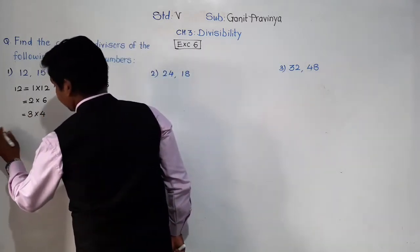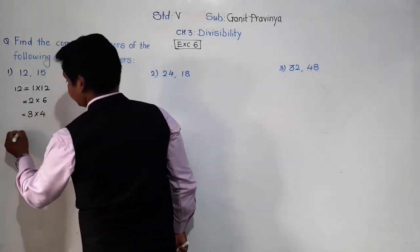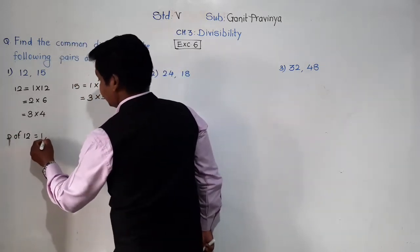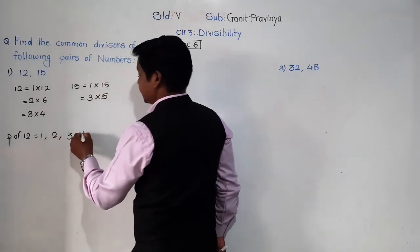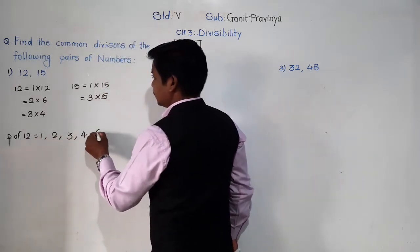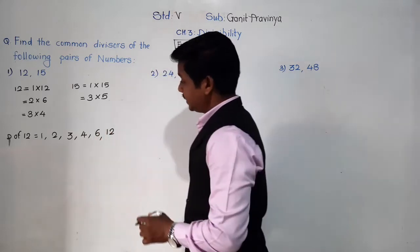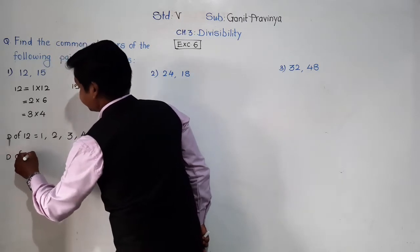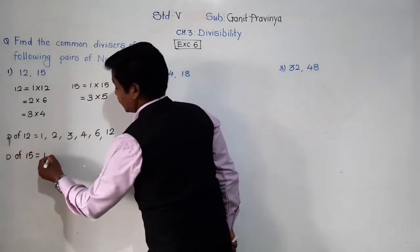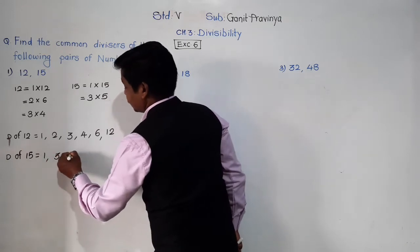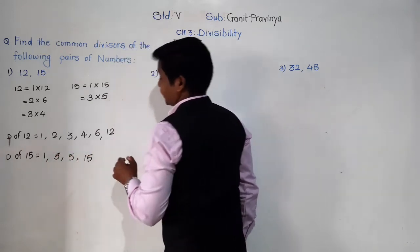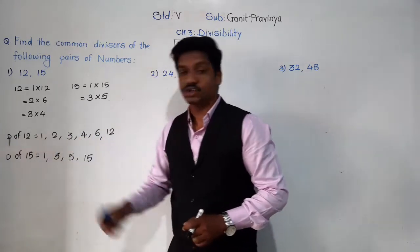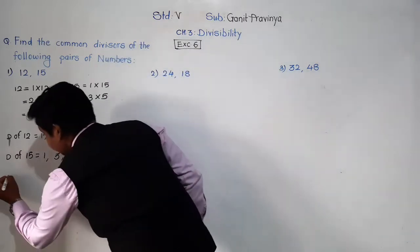So divisors of 12 — D of 12, where D means divisors — divisors of 12 are 1, 2, 3, 4, 6, and 12 itself. Whereas divisors of 15 are 1, 3, 5, and 15. So these are the divisors of 12 and these are the divisors of 15.